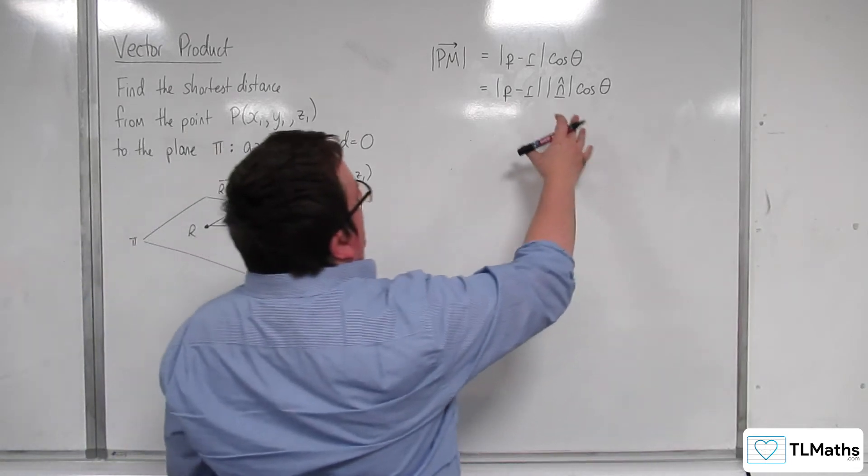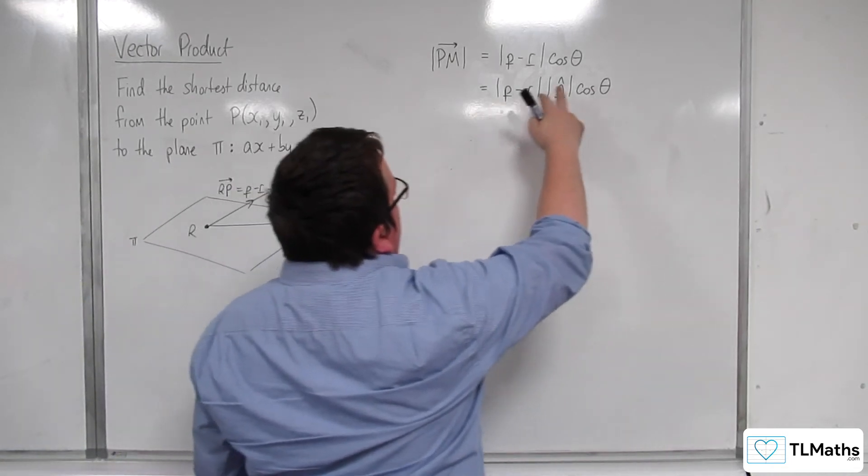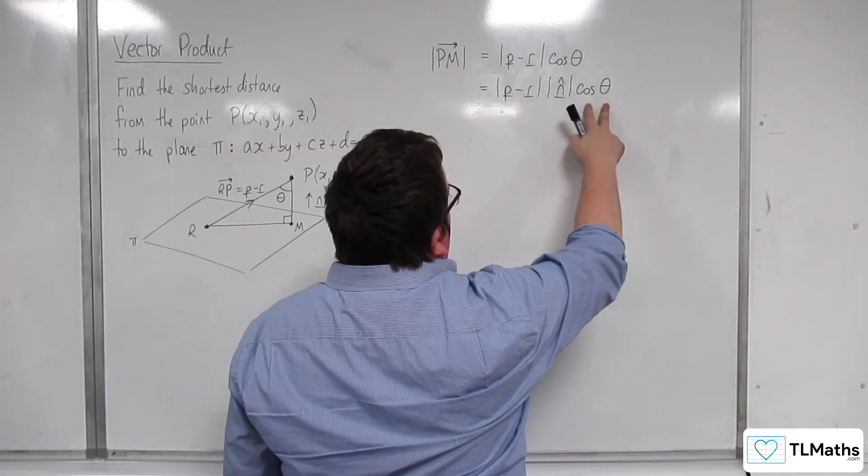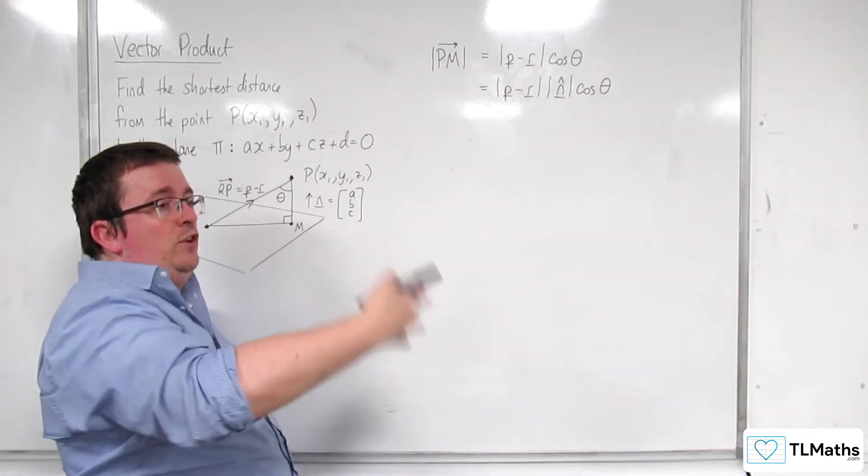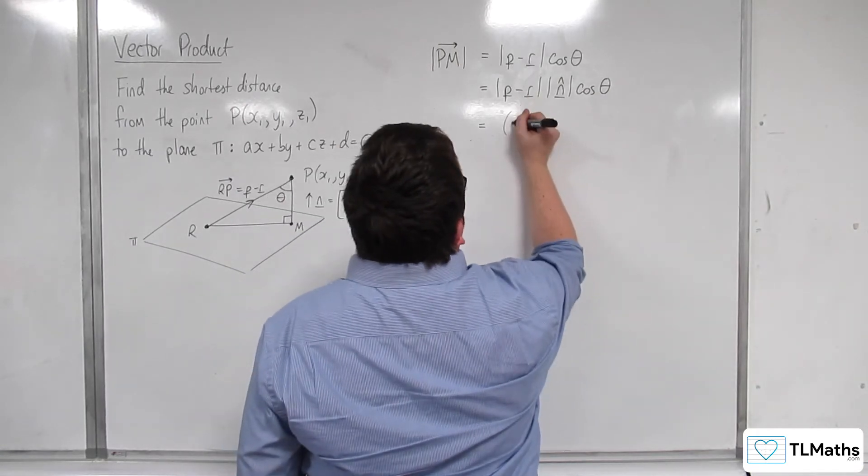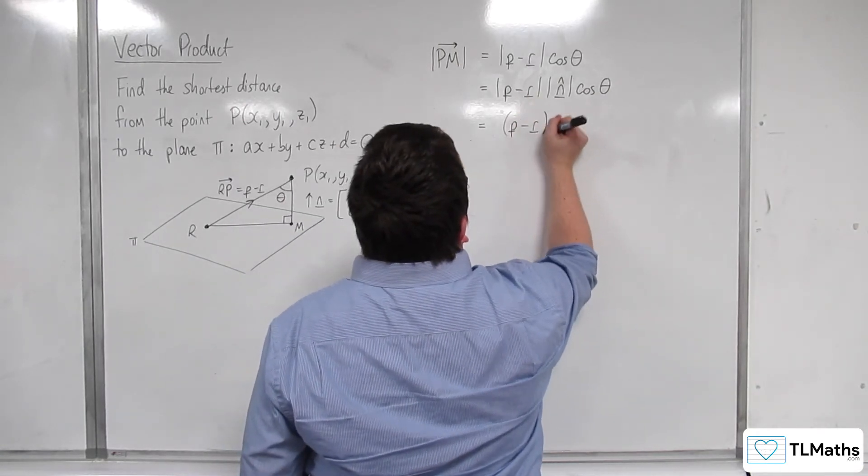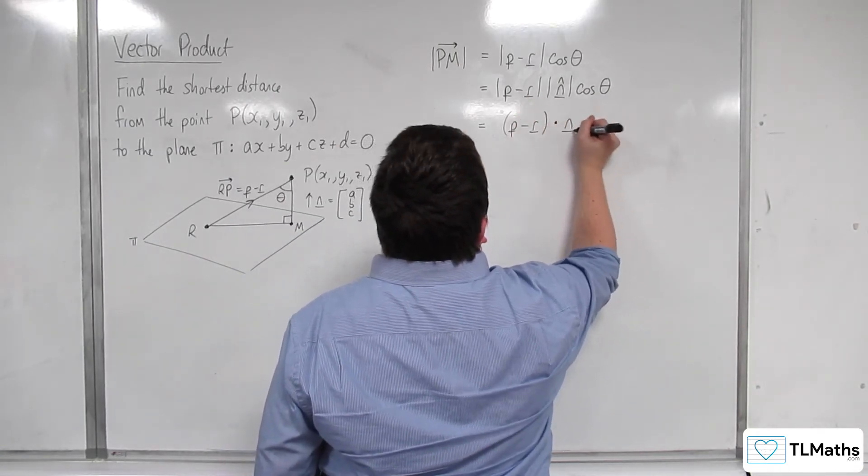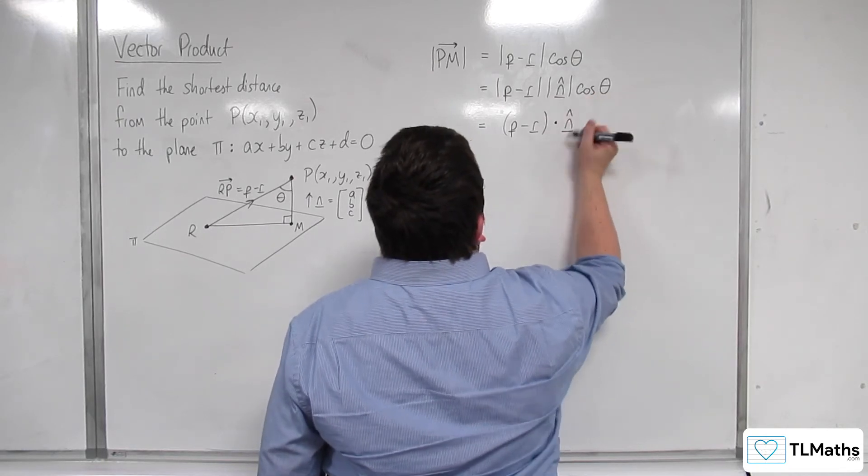Now what we need to spot here is that we've got mod A, mod B, cos theta, which is the scalar product. So that's the same as A dot B. So this is equal to P take away R dotted with the normal vector, the unit normal vector here.